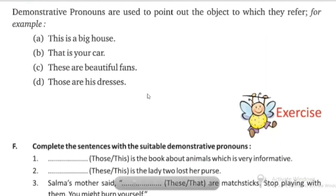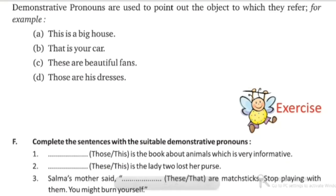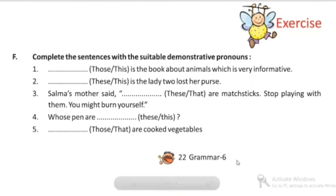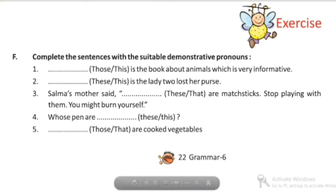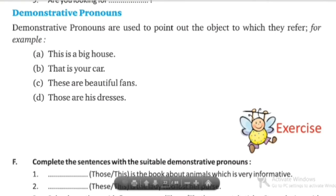Next is demonstrative pronoun. In this pronoun, we use it to point out the object to which they refer. Like 'this is a bed,' 'this is a big house' — the word 'this' is the demonstrative pronoun here. 'That is your car' — 'that' is the demonstrative pronoun. 'These are beautiful signs' — 'these' is a demonstrative pronoun. For example: 'This is the book about animals which is very informative.'